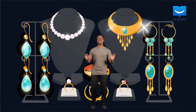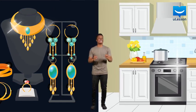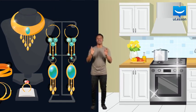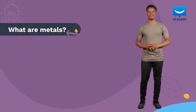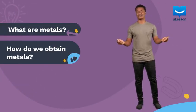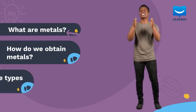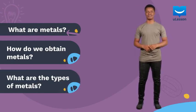When you look around your home and immediate environment, you would notice that most of the objects that are strong, hard and heavy are made of metal. Also, most pieces of jewelry or objects that shine are made of metals. So, what are metals? How do we obtain metals? And what are the types of metals?